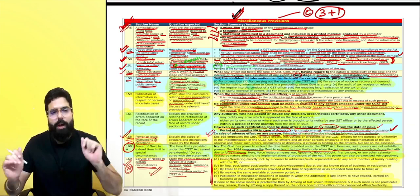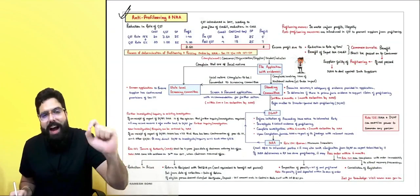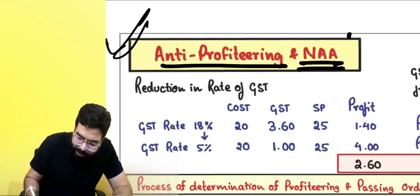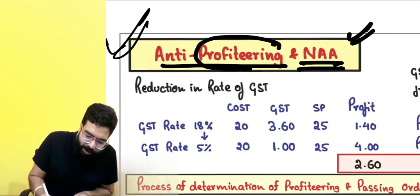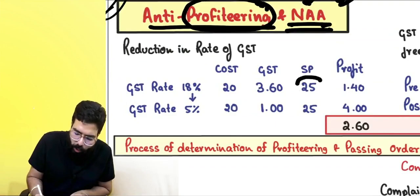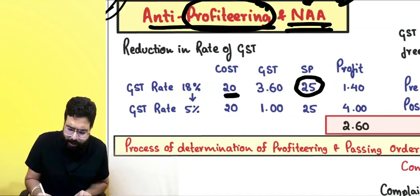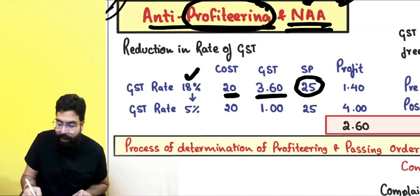Now let's start with the last chart, which relates to your chapter of miscellaneous provisions — specifically anti-profiteering and the National Anti-Profiteering Authority. They can go ahead and ask you a small question. First, let's understand what profiteering means and what the National Anti-Profiteering Authority does.